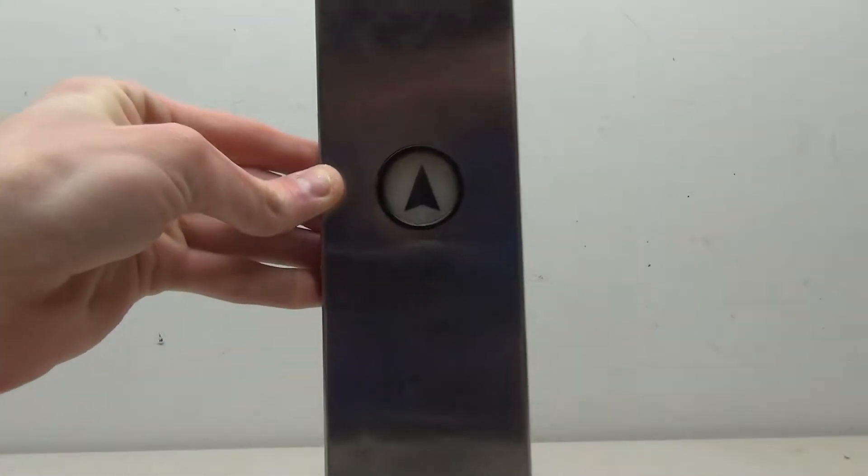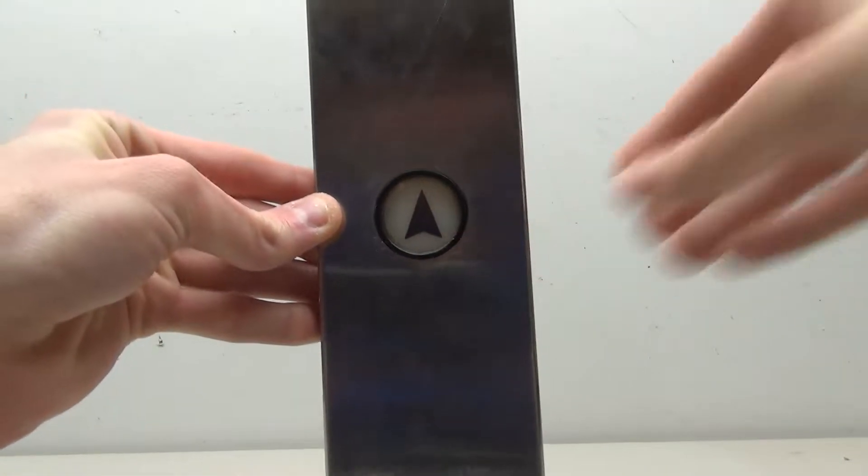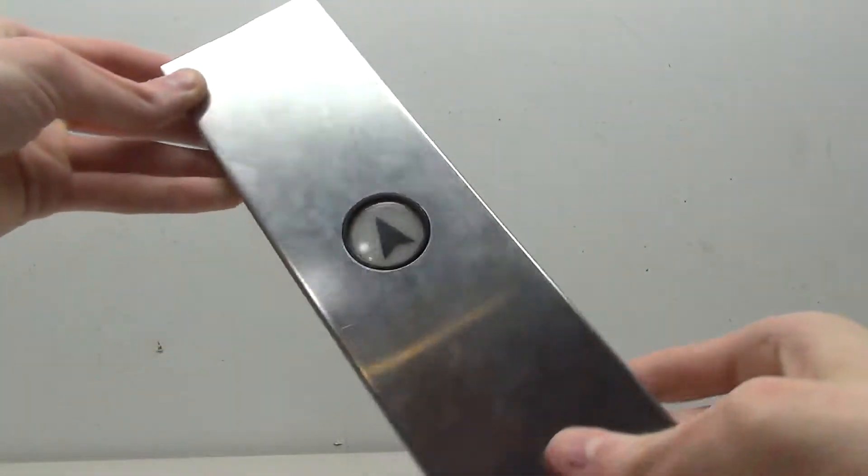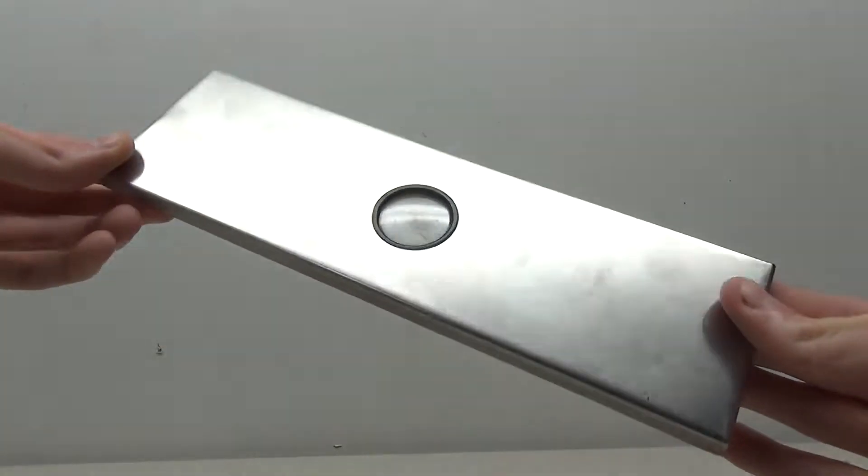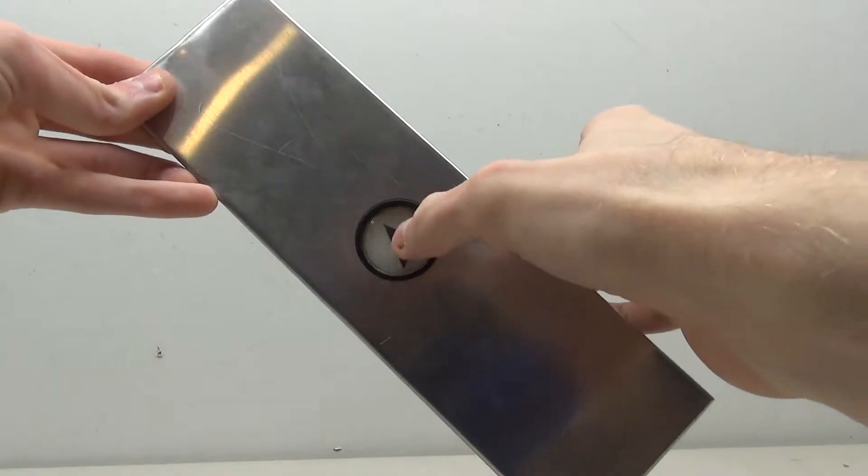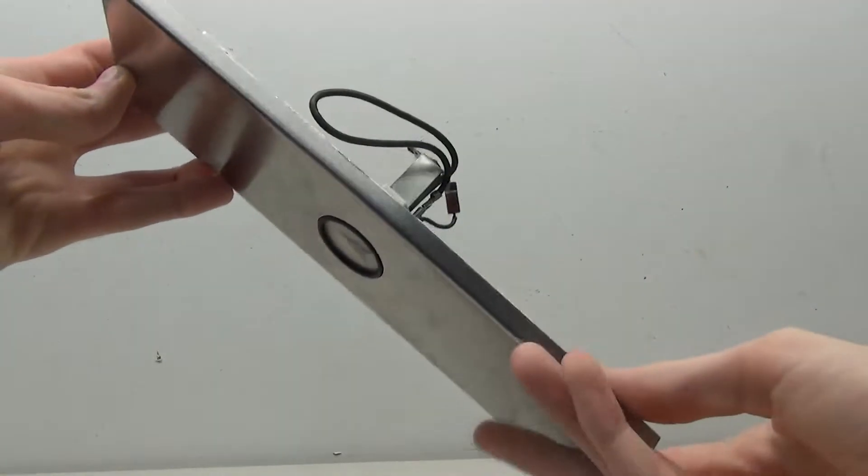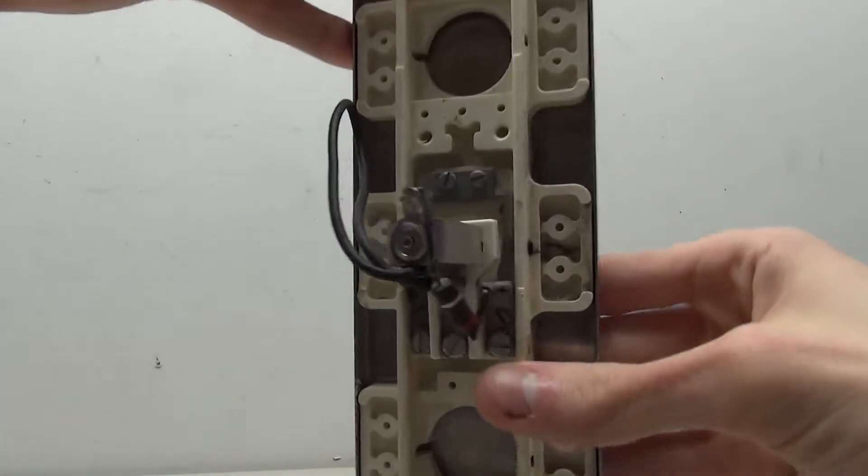Today we're taking a look at this Westinghouse call button. Let's go ahead and get started. This is just a very basic style Westinghouse call station from the 70s, and this is the type A fixture.